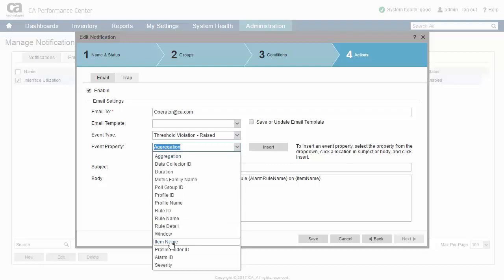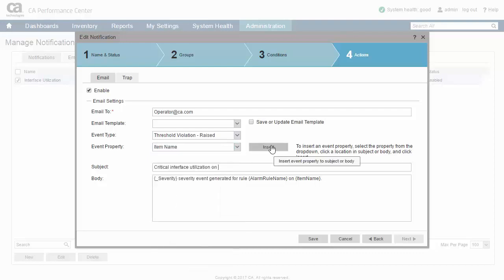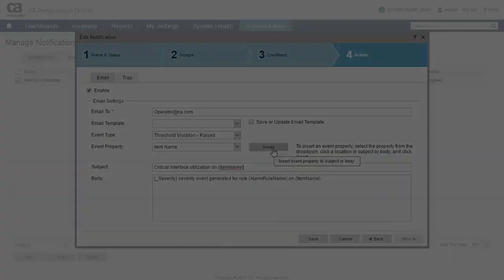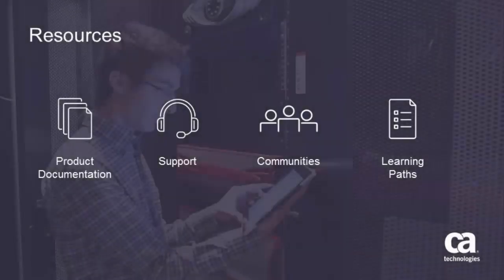The Create Notifications rule right is required to configure notifications. For more detailed information about configuring threshold events and notifications in CA Performance Management, click the information bubble in the top right corner to load the product page. From there, you can go to the product documentation, visit CA Communities, or see the learning path.